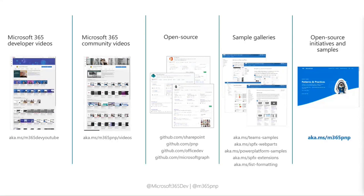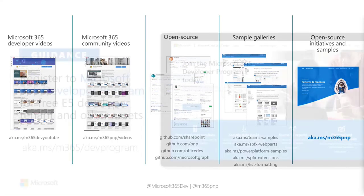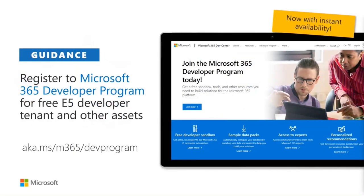A few reminders: you should absolutely sign in and register for the Microsoft 365 Developer Program, where you get a free E5 developer tenant with additional demo assets. It's free — just your email and phone number to validate who you are. The tenant auto-renews every 90 days as long as you use it for developer purposes. It's not for production use; there's instrumentation inside to detect how it's being used.